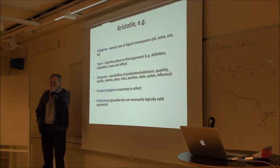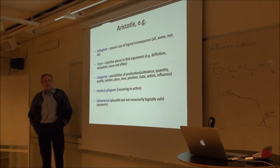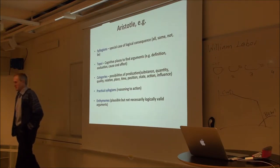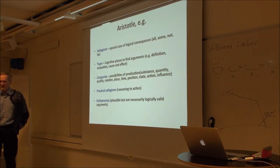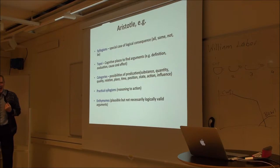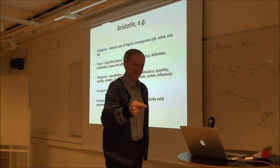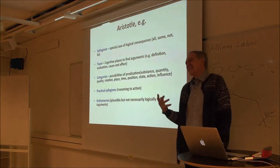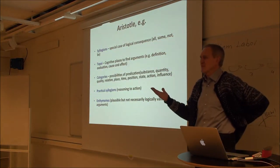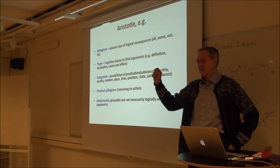For example: all Swedes are tall; Arvid is a Swede; therefore Arvid is tall. Now you can see the difference between logical validity and empirical truth. Arvid is sitting over there — he's not so tall. But logically, if it's true that all Swedes are tall and you are a Swede, then you must be tall. That's a valid logical inference, however not an empirical truth. Right from the start, learn the difference between logical inference and empirical truth. Something is wrong with the premises here — 'all Swedes are tall' must not be true. But a premise doesn't have to be true; it's just a premise.